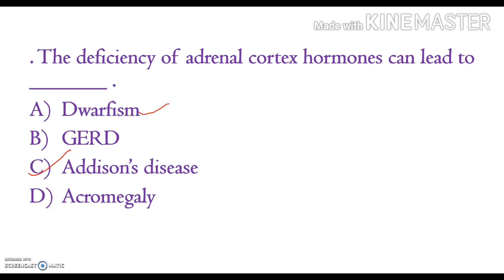Dwarfism occurs due to the growth hormone — when extra or sufficient growth hormone release decreases, or there is a deficiency, dwarfism occurs. GERD is a long-term condition where acid from the stomach comes up into the esophagus, causing irritation.